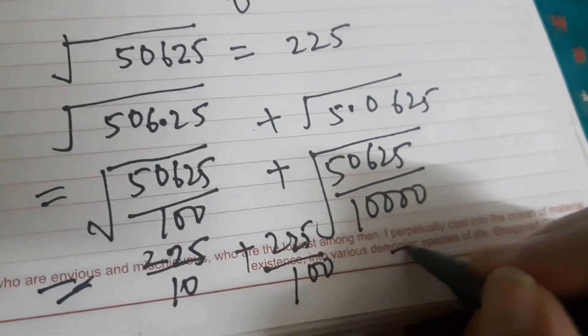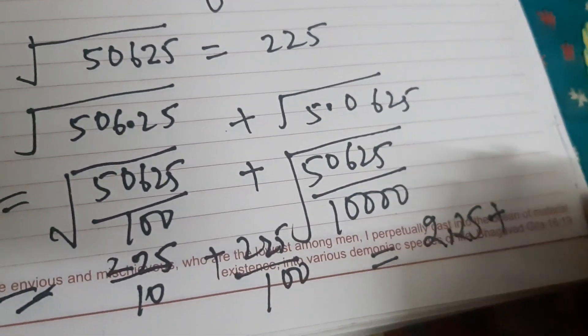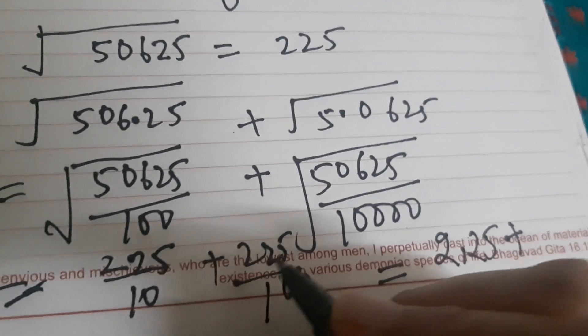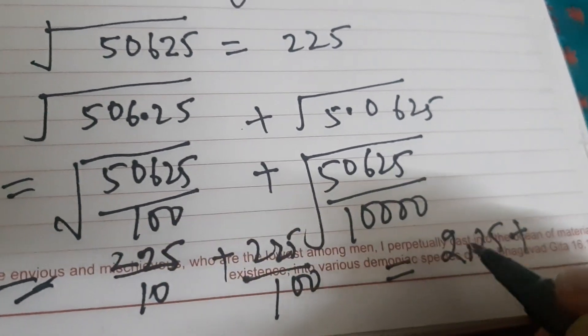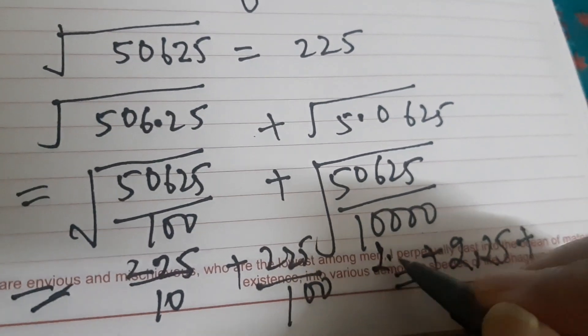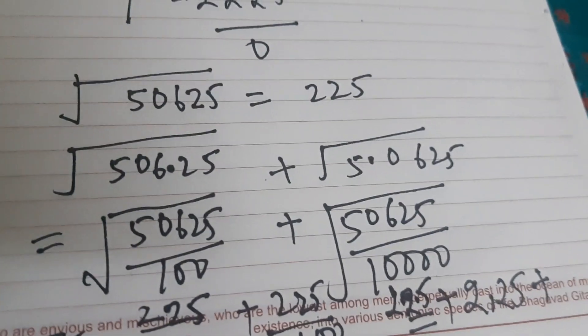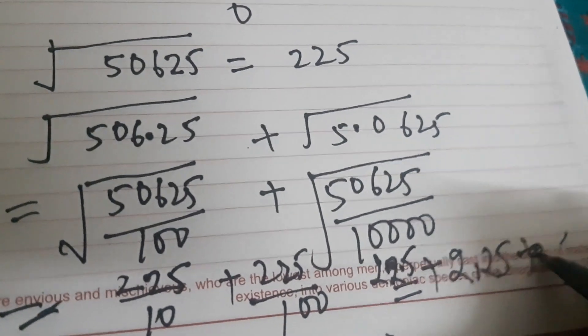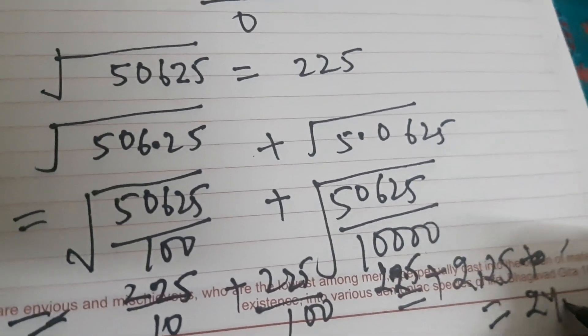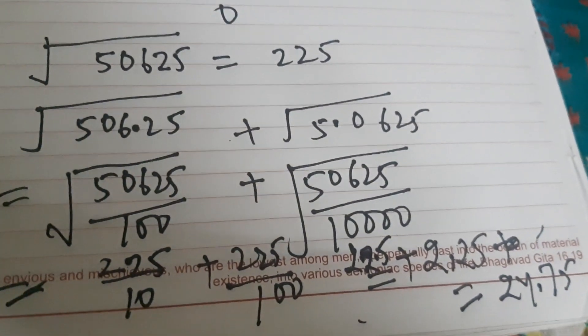So this is equal to 2.25, plus for the first it will be 22.5. So 22.5 plus 2.25 gives me 24.75, which is the final answer. I hope the question is clear to you.